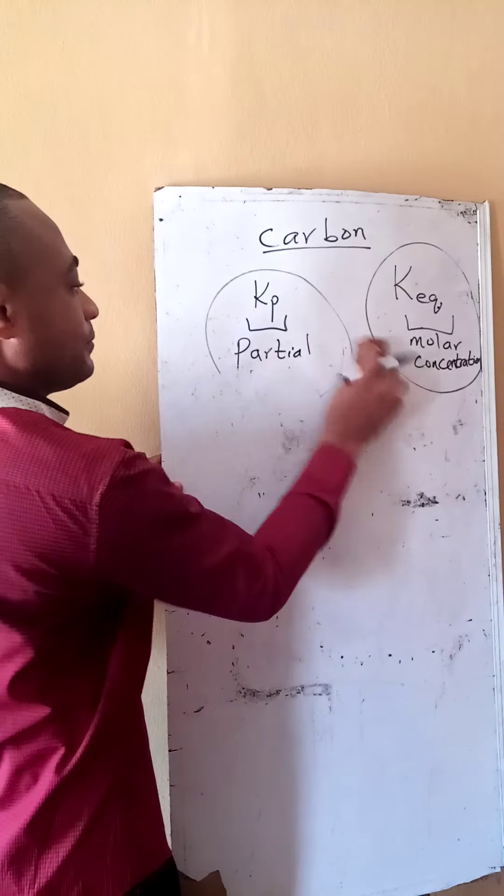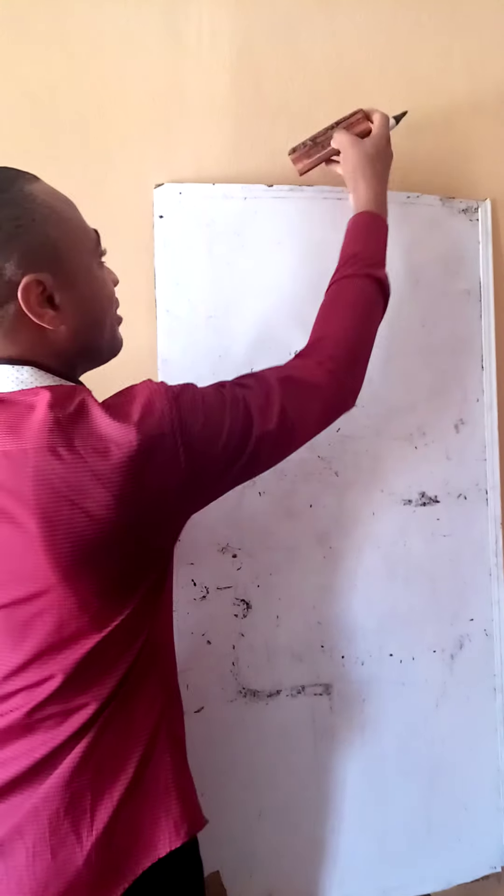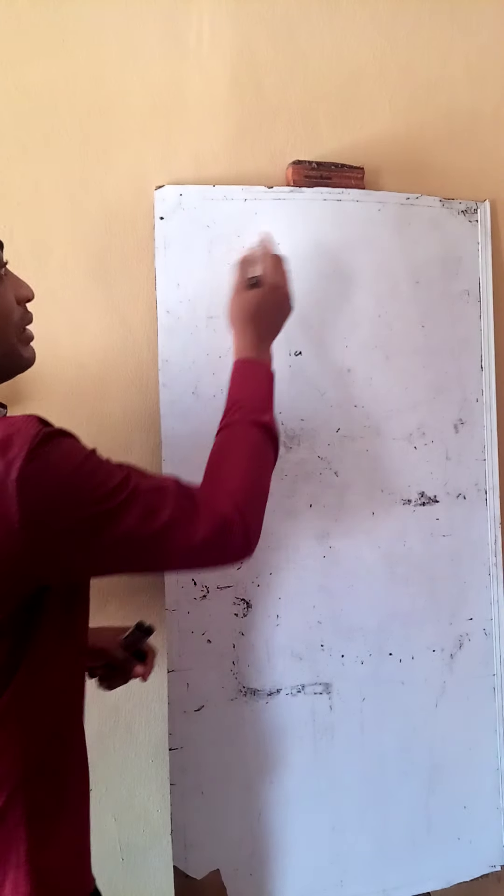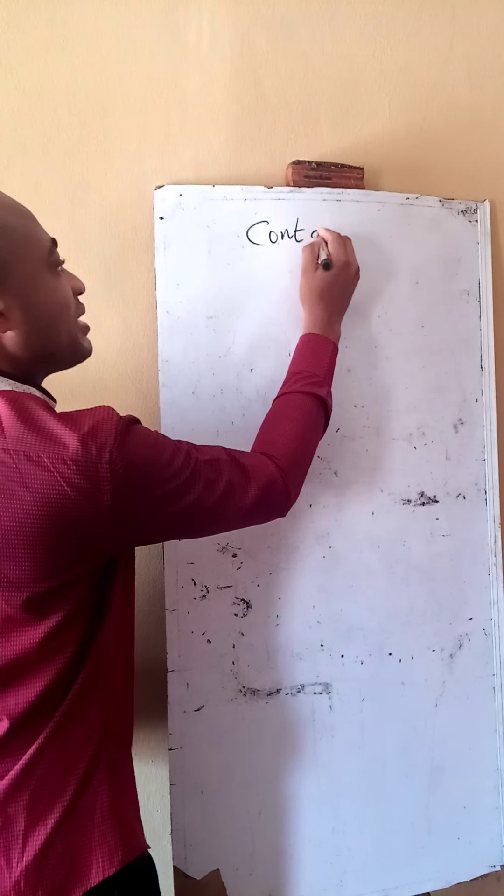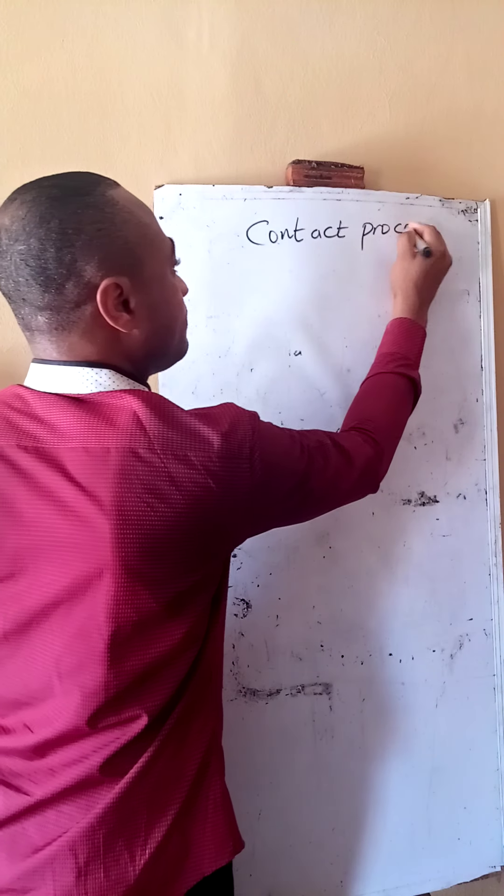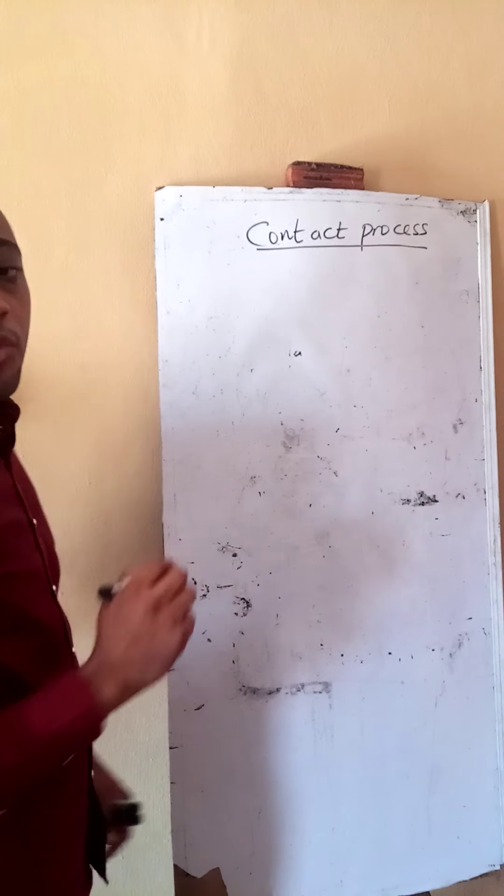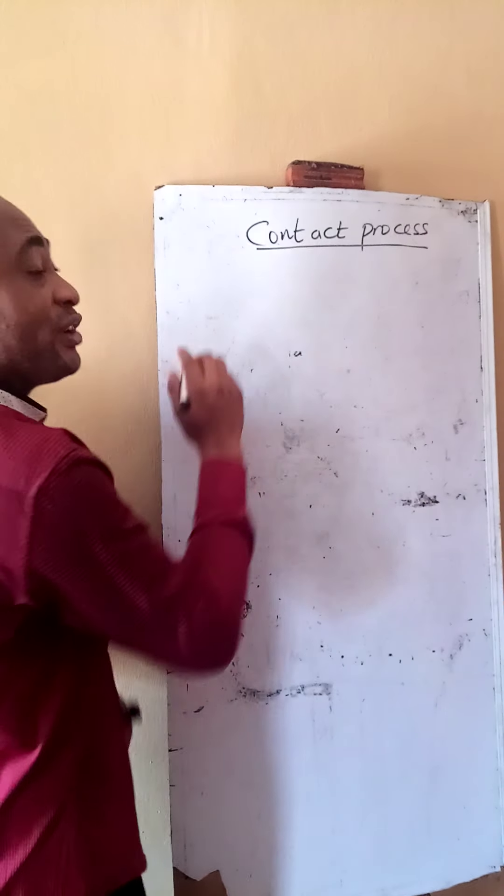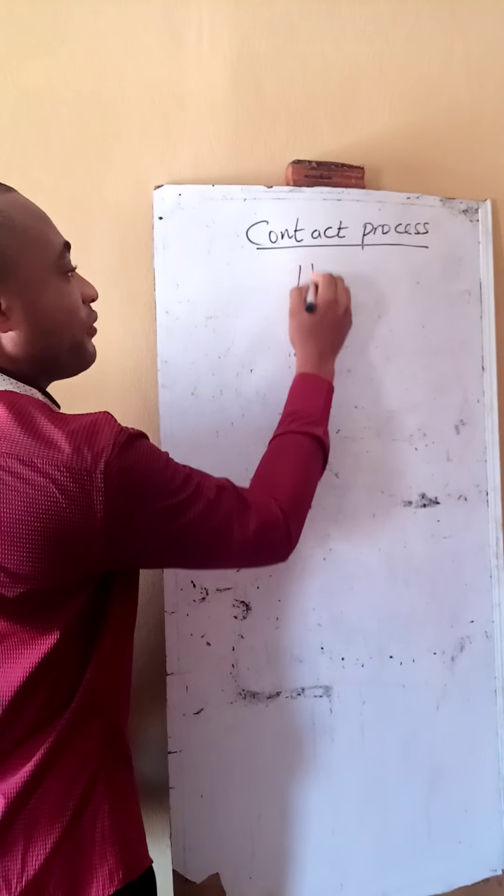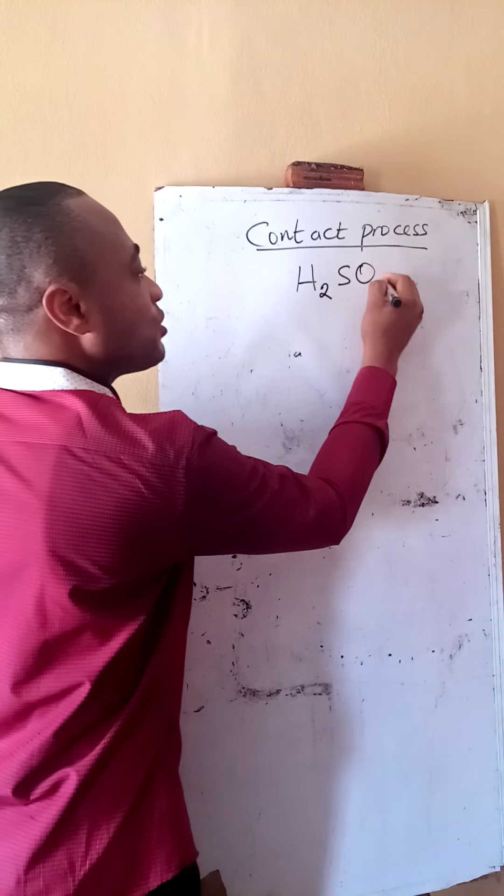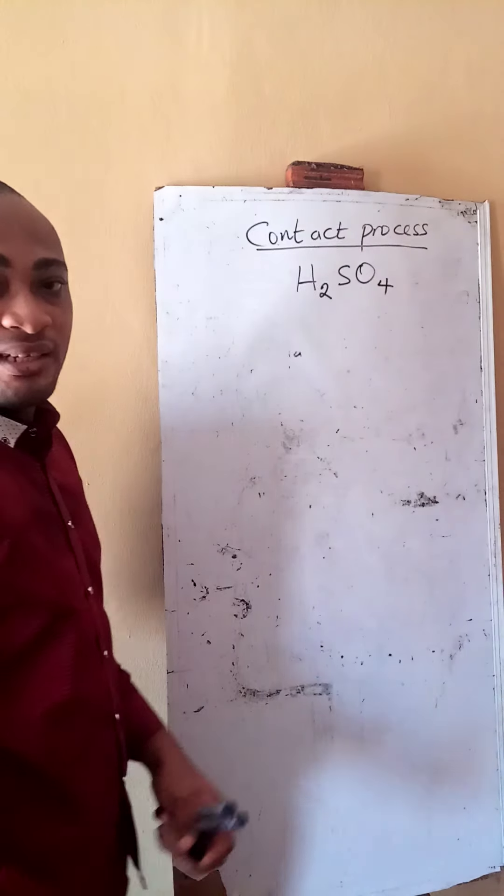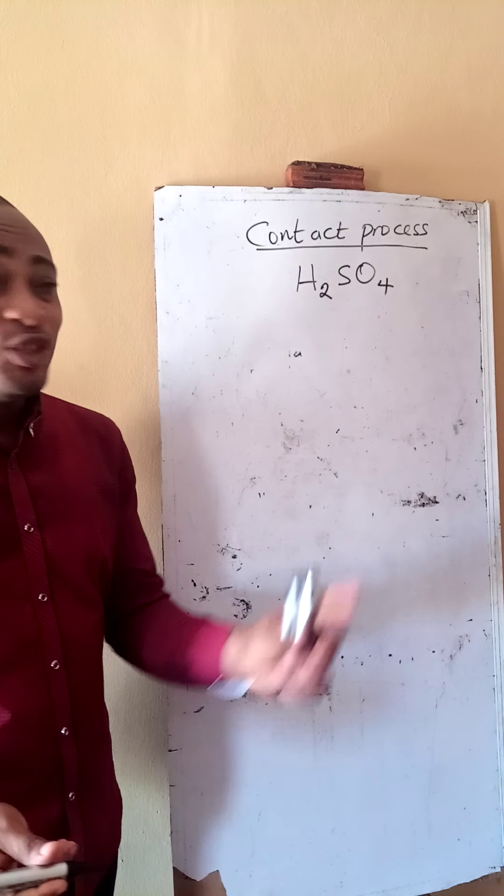Let me just take this off before we look at carbon. Now let's look at the contact process. Remember that this process is for the industrial manufacture of tetraoxosulfate six acid.